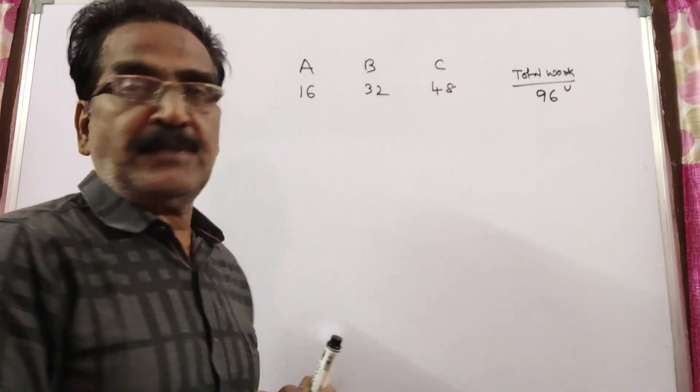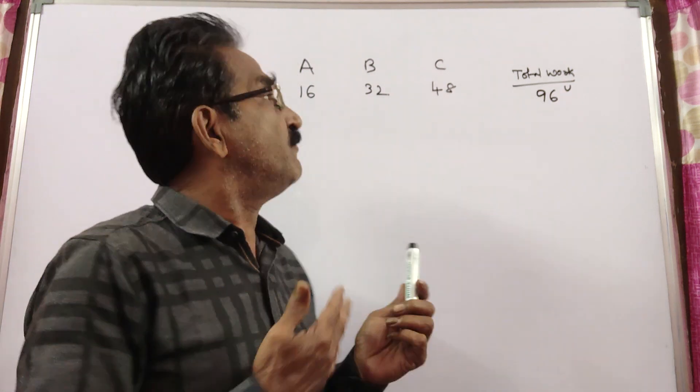See friends, A, B, C can do a work in 16, 32 and 48 days.